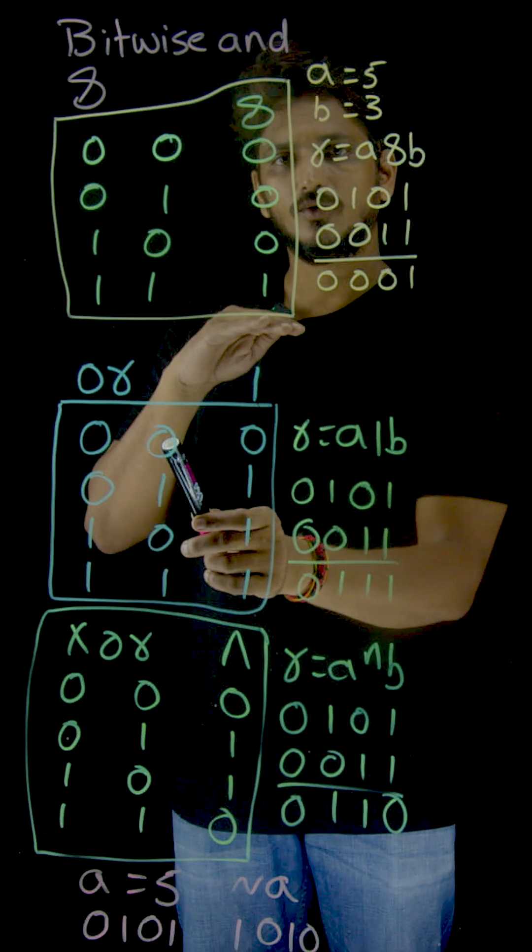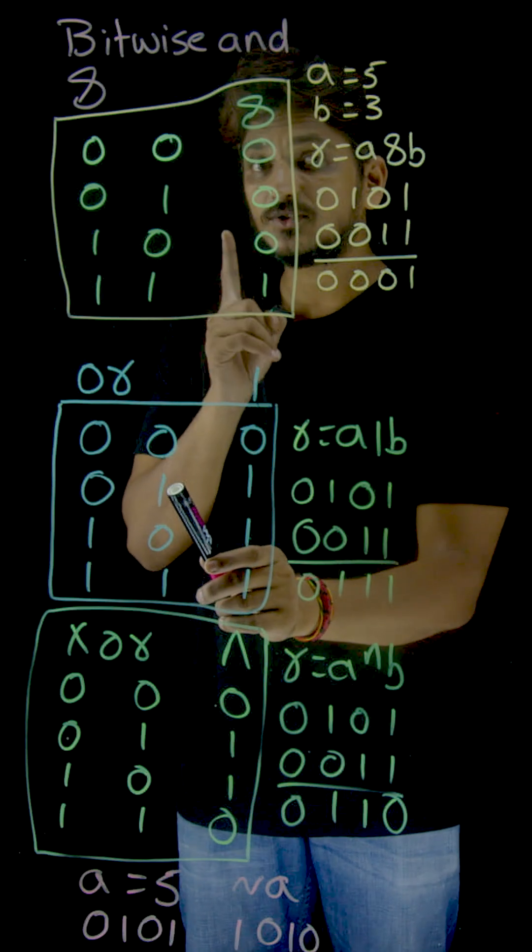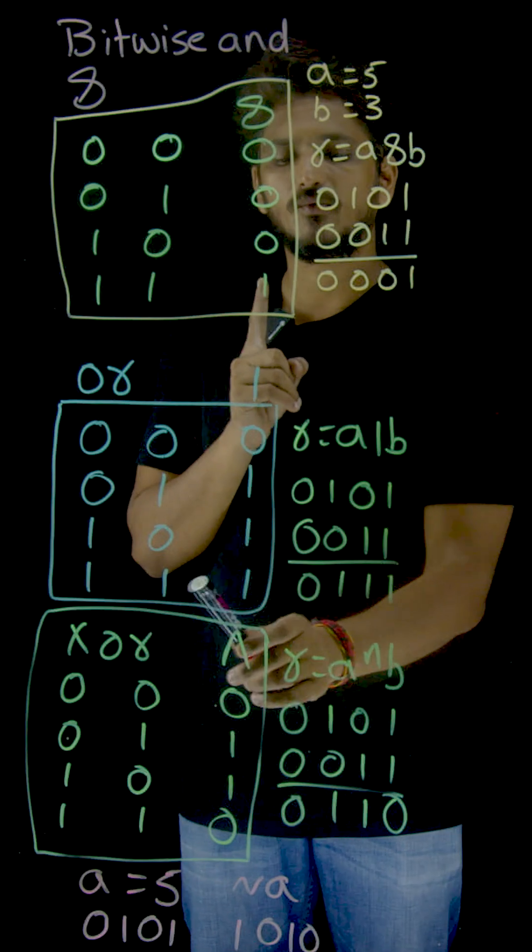0 0. No 1's, that is why it is 0. 0 1. At least one 1, so 1. 1 0 equals 1. 1 1 equals 1.